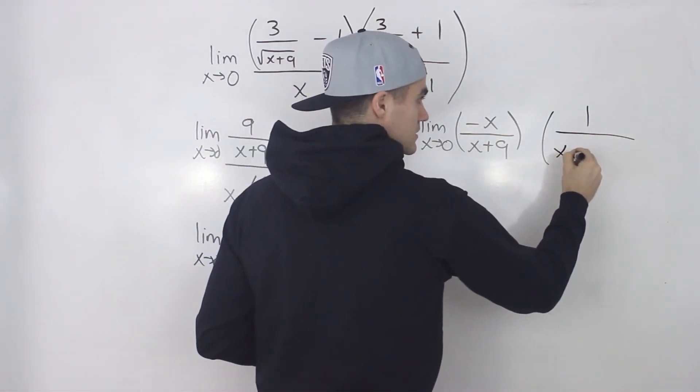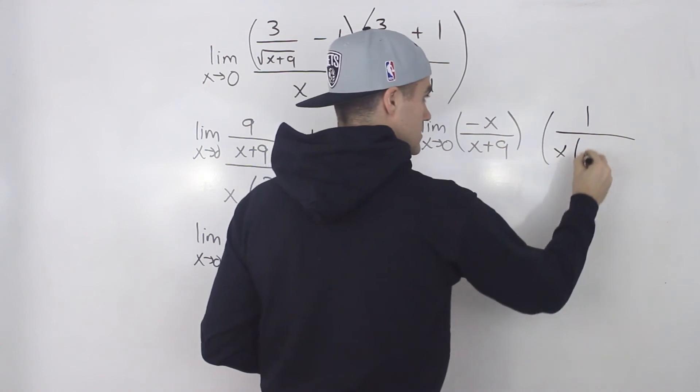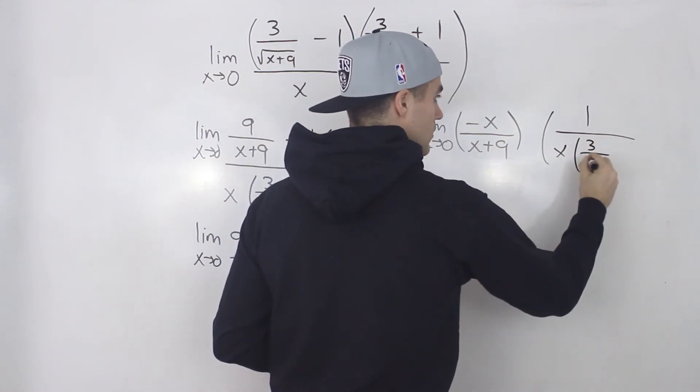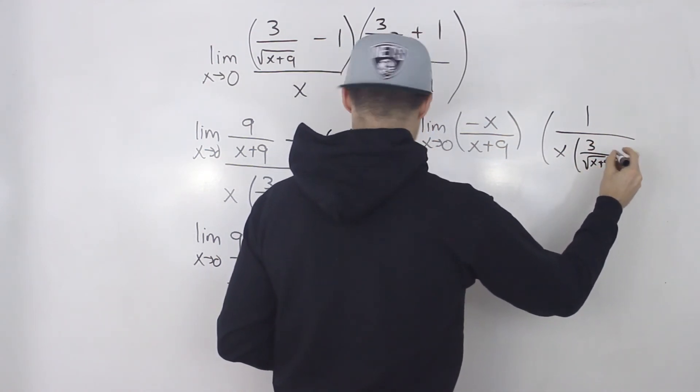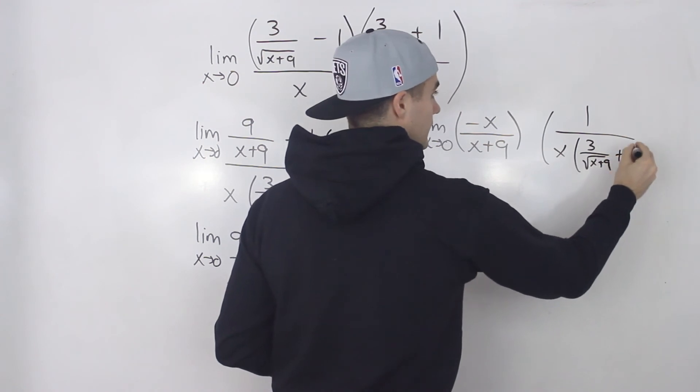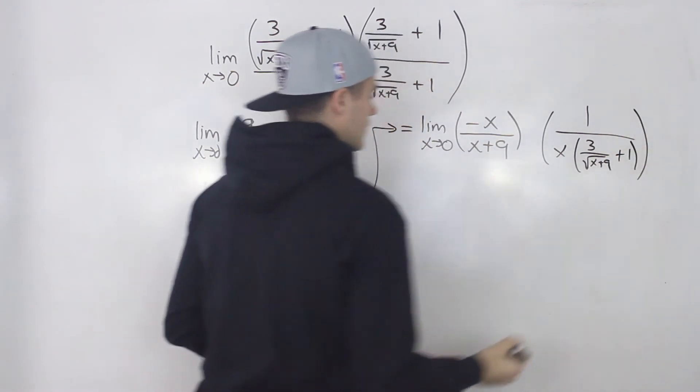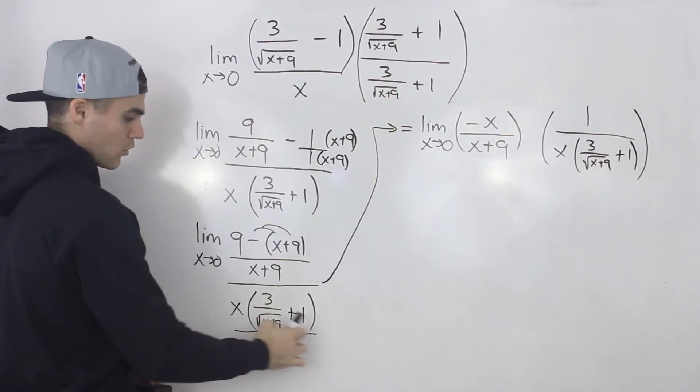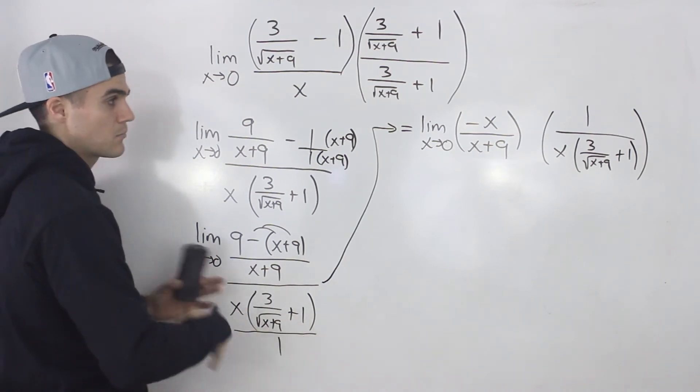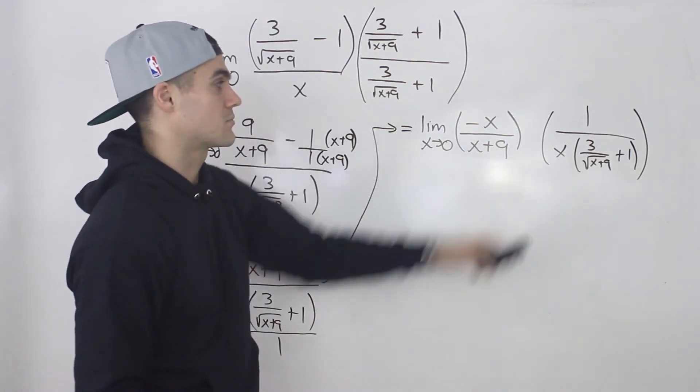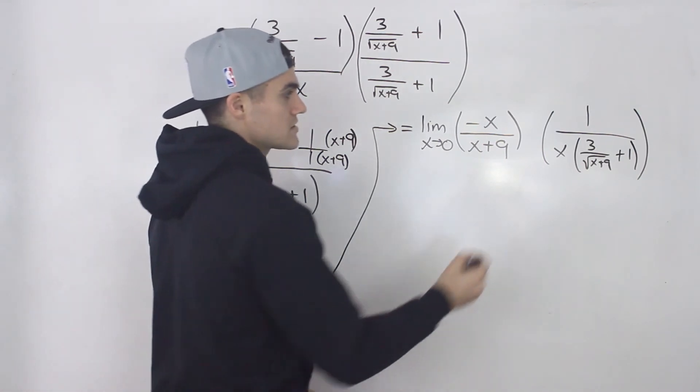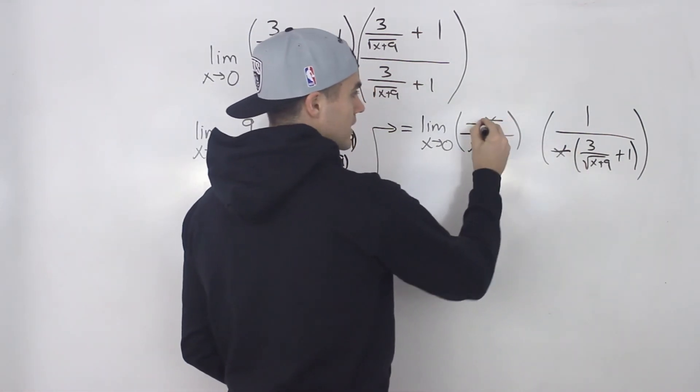So x times 3 over the square root of x plus 9 plus 1. Right? So I just took this whole term over 1. Since we're dividing it by this fraction, it's like multiplying it by the reciprocal.